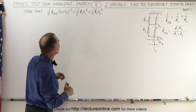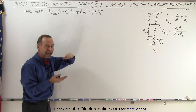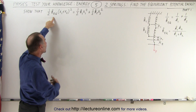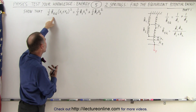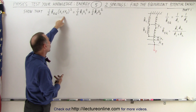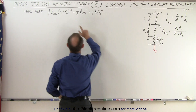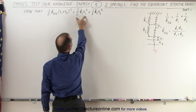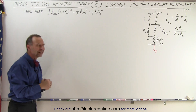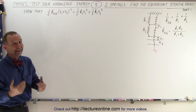What we're trying to do now is show that the potential energy gained by elongating the two springs can be expressed in terms of the equivalent spring constant. We should show that one-half k_equivalent times (x1 + x2)² equals the potential energy gained by the first spring plus the potential energy gained by the second spring. Can we show that those two are equivalent? That's our job.